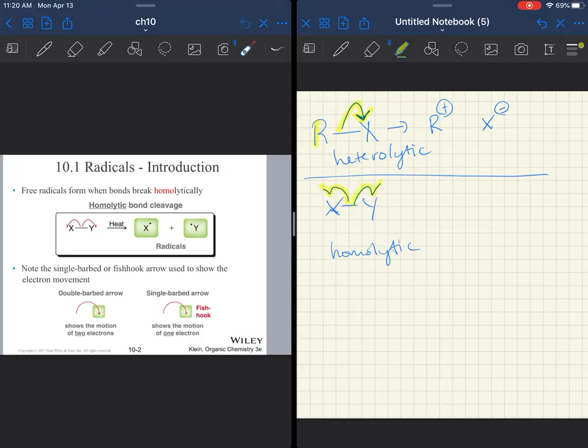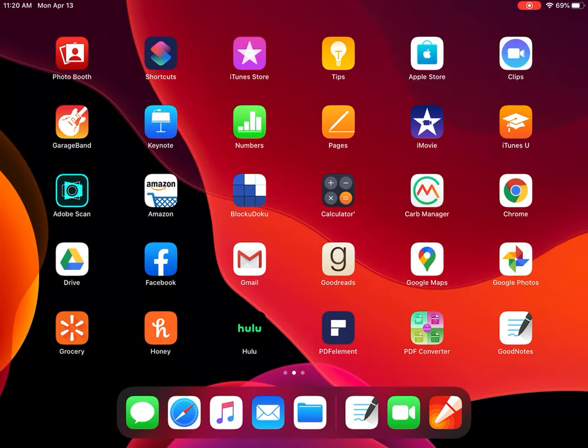Now notice two different arrow types here. If both electrons are moving in one direction, we get a double-headed arrow. If one electron is moving, or the electrons are moving in different directions, we get a single-headed arrow. That arrow communicates a lot to us about where the electrons are going and also how many electrons are moving.